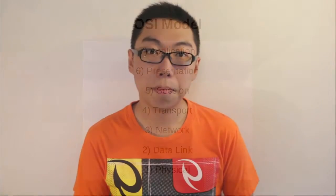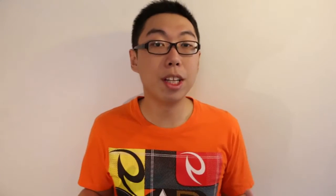OSI stands for Open Systems Interconnection, and basically its model is broken up into seven layers. These layers are your seven levels of abstraction, and serve to basically describe all the communications between any two devices. What we're going to do today is look at all these layers from the bottom up, and try to understand what each layer is for.